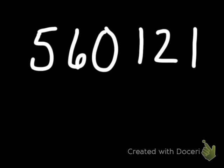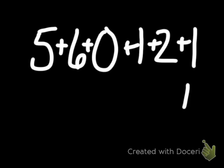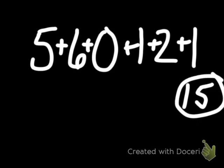Let's apply this rule to a very large number: 560,121. If I add up all the digits — 5 plus 6 is 11, plus 0 is 11, plus 1 is 12, plus 2 is 14, plus 1 is 15 — I get the sum of the digits being 15. And 3 divides into 15, so 3 will divide into 560,121.